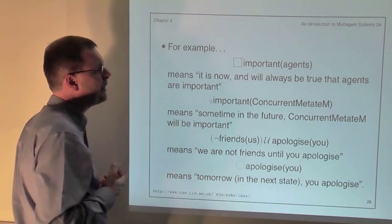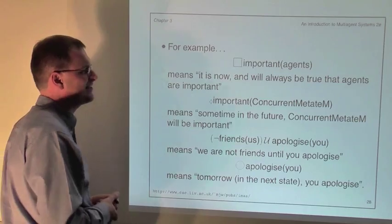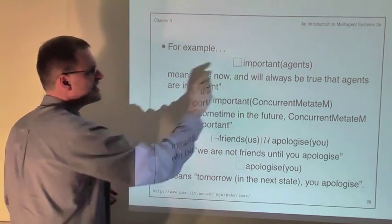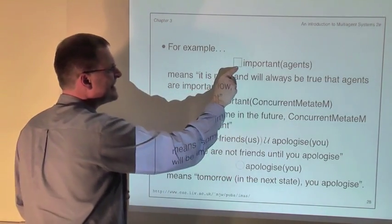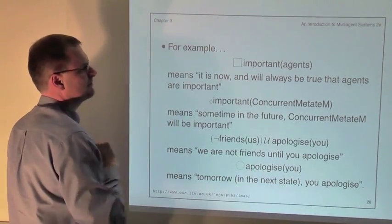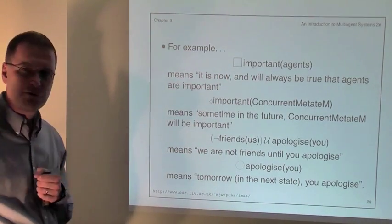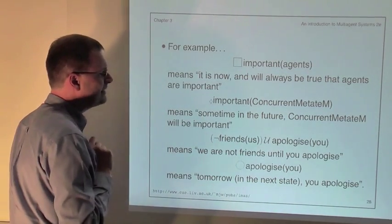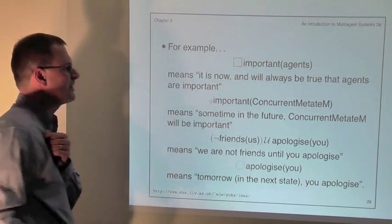The idea is that we use a bunch of what are called temporal operators to augment classical logic. The first of these operators is the empty box symbol. We apply this to a logical formula and it means it is now and always will be true that this formula holds. The diamond symbol means eventually — it means at some point in the future it will be true.